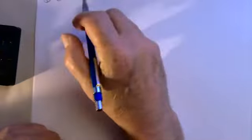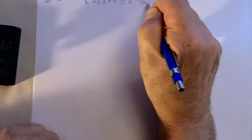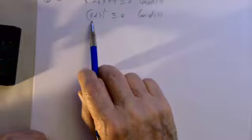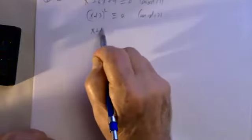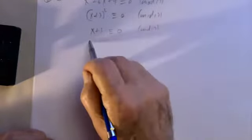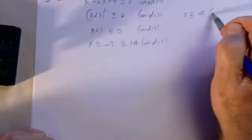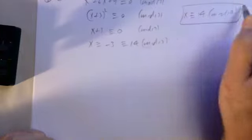Problem five, part A: solve x²+6x+9≡0 mod 17. This factors as (x+3)²≡0 mod 17. The only time the square of an integer is 0 mod 17 is when x+3≡0 mod 17, which means x≡−3≡14 mod 17. So the solution is all x≡14 mod 17.